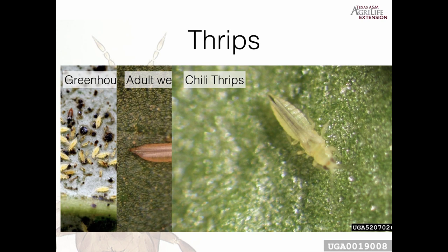Depending on the species you have, they may prefer certain types of plants and feed on certain parts of the plant. As the name implies, western flower thrips prefer to feed inside the flower, whereas chili thrips you'll often find feeding on the stems and petioles of leaves.